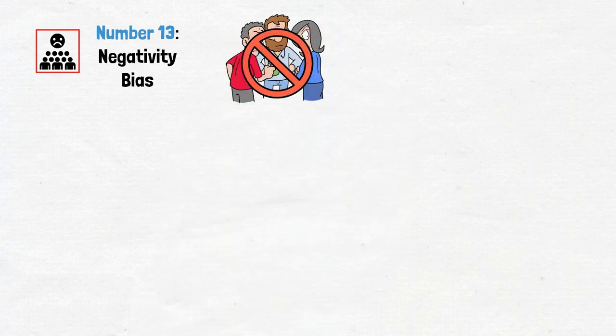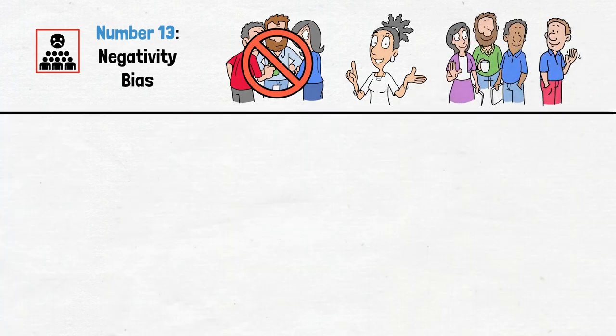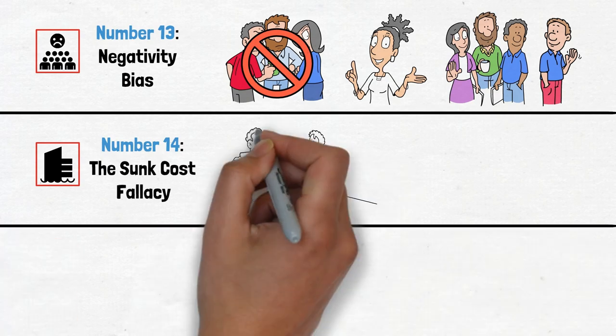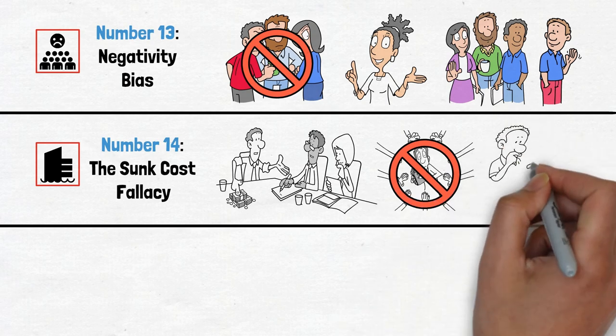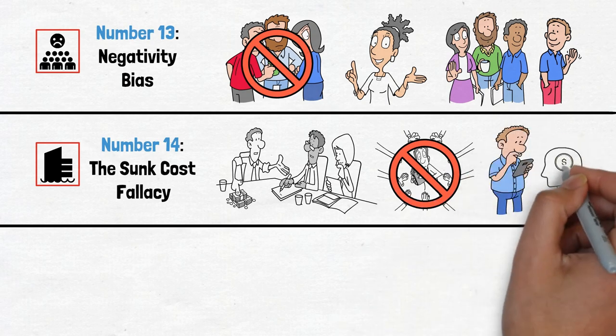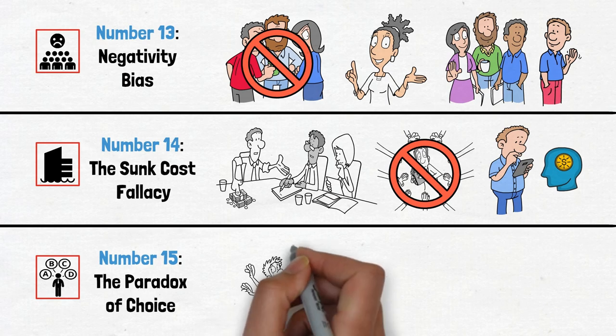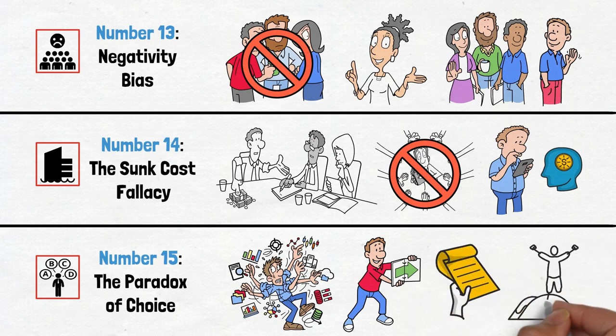Number 14, the sunk cost fallacy. Just because you've invested a lot doesn't mean you should keep going. Cut your losses and focus on future returns instead. Number 15, the paradox of choice. Too many options can lead to decision paralysis. Simplify your choices and make decisions with clarity.